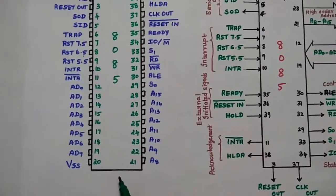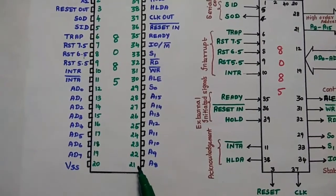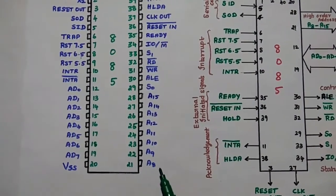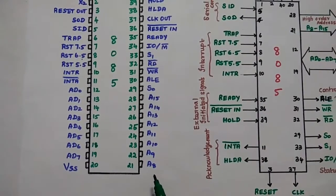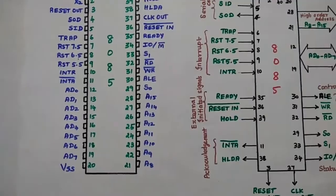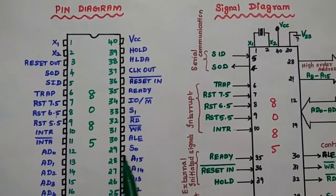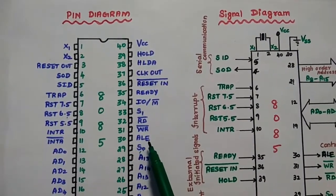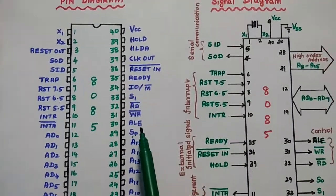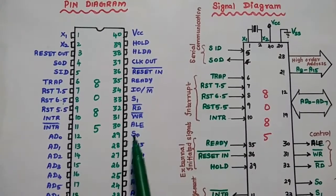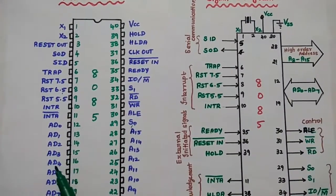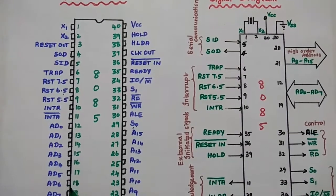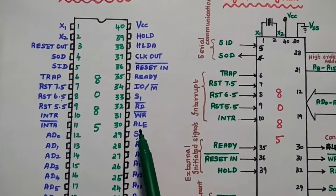Now we move to the right-hand side. From pin 21 to pin 28, these 8 pins represent the higher byte of address lines, that is A8 to A15. After that, the 29th pin is S0, a status signal. The 30th pin is ALE — address latch enable. This signal is very important: whenever ALE equals 1, the address lines are activated from the multiplexed lines, separating the lower byte address from the multiplexed address and data lines.